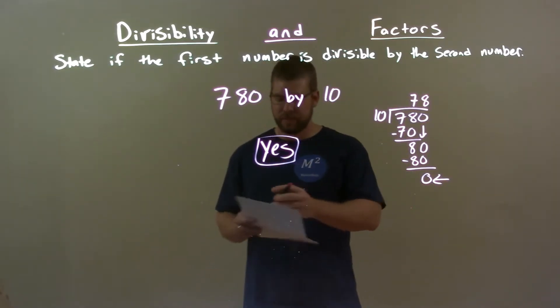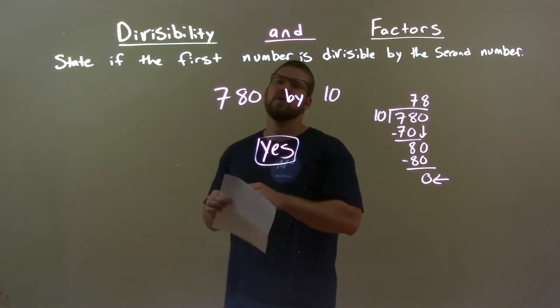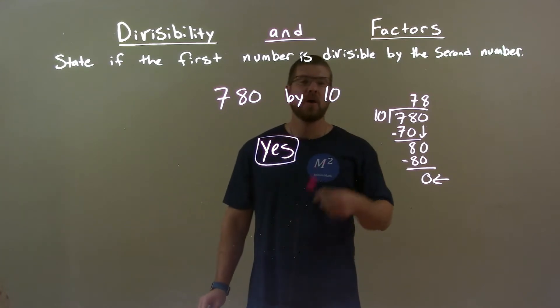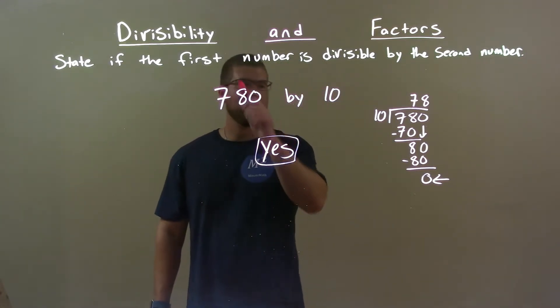So, yes. Quick recap: we're given 780 and we're asked if it's divisible by 10. Quick answer: yes. Ends in a 0, divisible by 10.